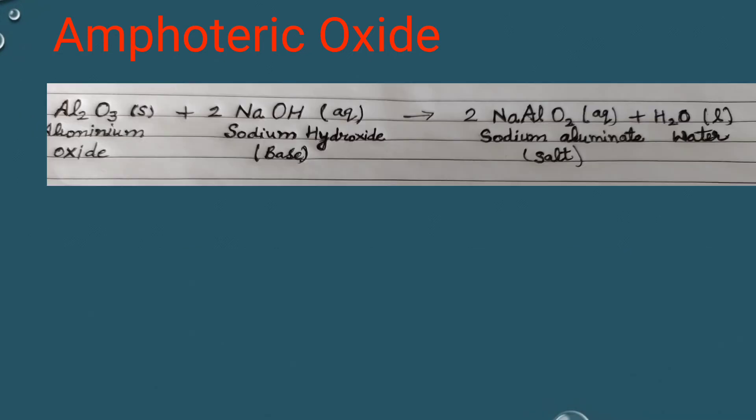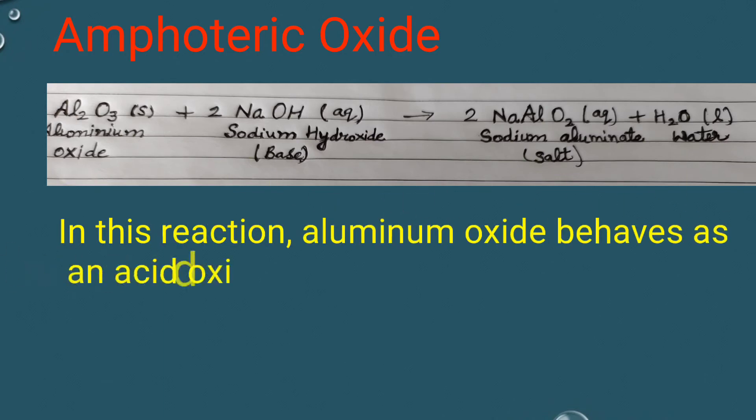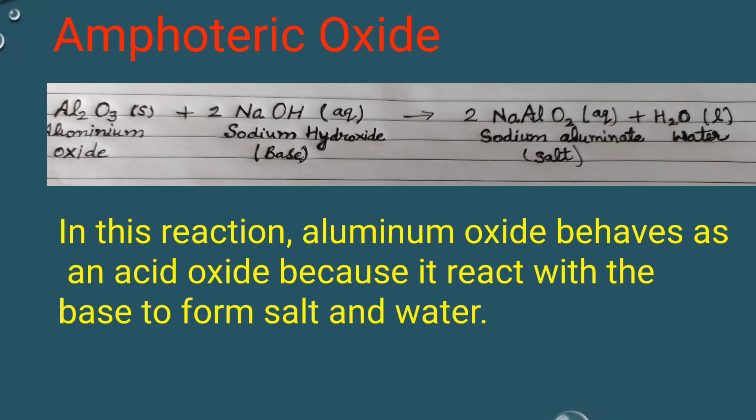In the second reaction, aluminium oxide behaves as an acid oxide because it reacts with the base to form salt and water.